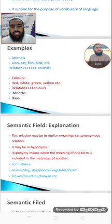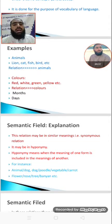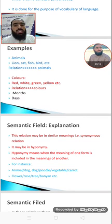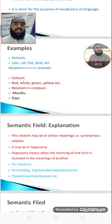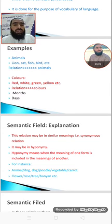Another example is colors. In colors, we have red, white, green, yellow, etc. The same concept is present in all these words, so they make one Semantic Field — they belong to one Semantic Field. Their mutual relation is color.